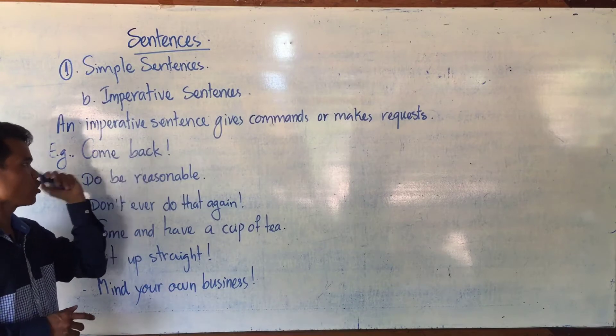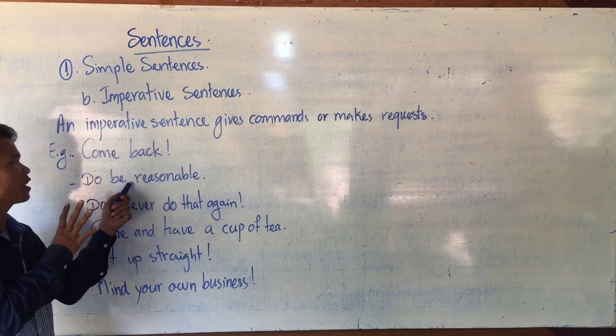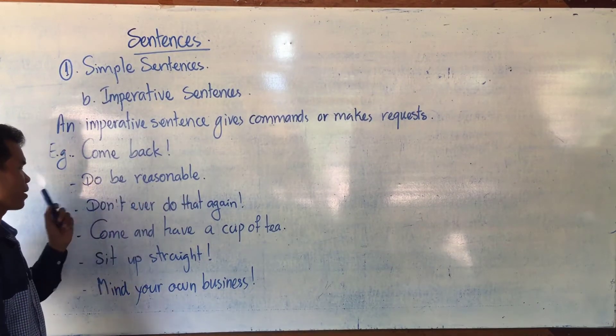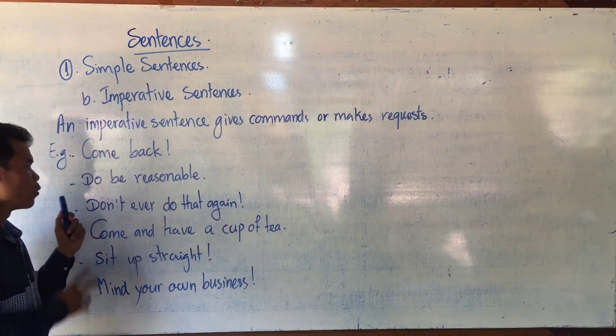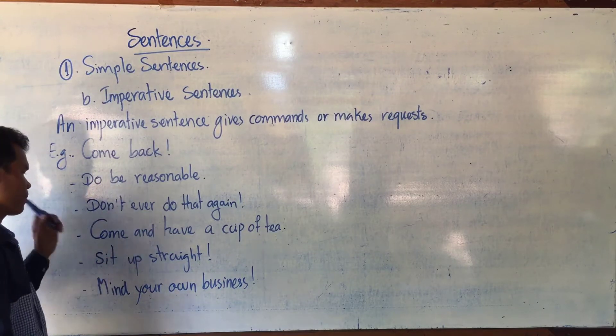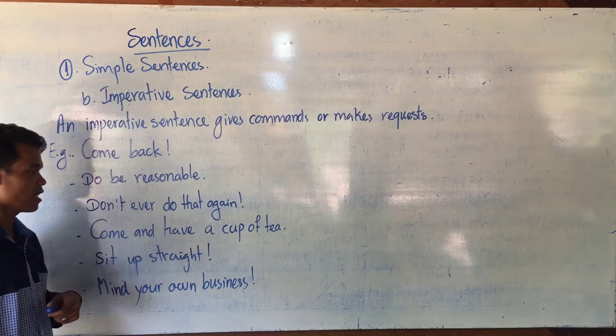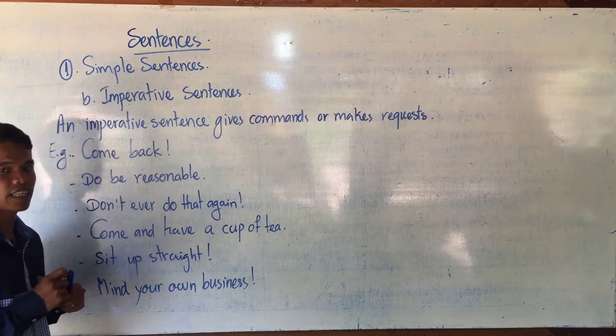Come back. You come back, in fact. Do be reasonable. If you are not using an imperative sentence, you are reasonable. Don't ever do that again. You don't ever do that again if it is simple sentence or if it is declarative sentence. Come and have a cup of tea. You come and have a cup of tea if it is declarative sentence.